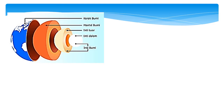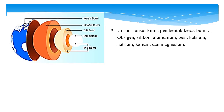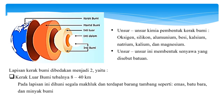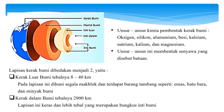Unsur-unsur kimia pembentuk kerak bumi adalah oksigen, silikon, aluminium, besi, kalsium, natrium, kalium, dan magnesium. Unsur-unsur ini membentuk senyawa yang disebut batuan. Lapisan kerak bumi dibedakan menjadi dua, yaitu kerak luar bumi yang tebalnya 8-40 km, di mana lapisan ini dihuni segala makhluk dan terdapat barang tambang seperti emas, batu bara, dan minyak bumi. Lapisan selanjutnya adalah kerak dalam bumi yang tebalnya 2.900 km, lapisan ini keras dan lebih tebal yang merupakan bungkus inti bumi.